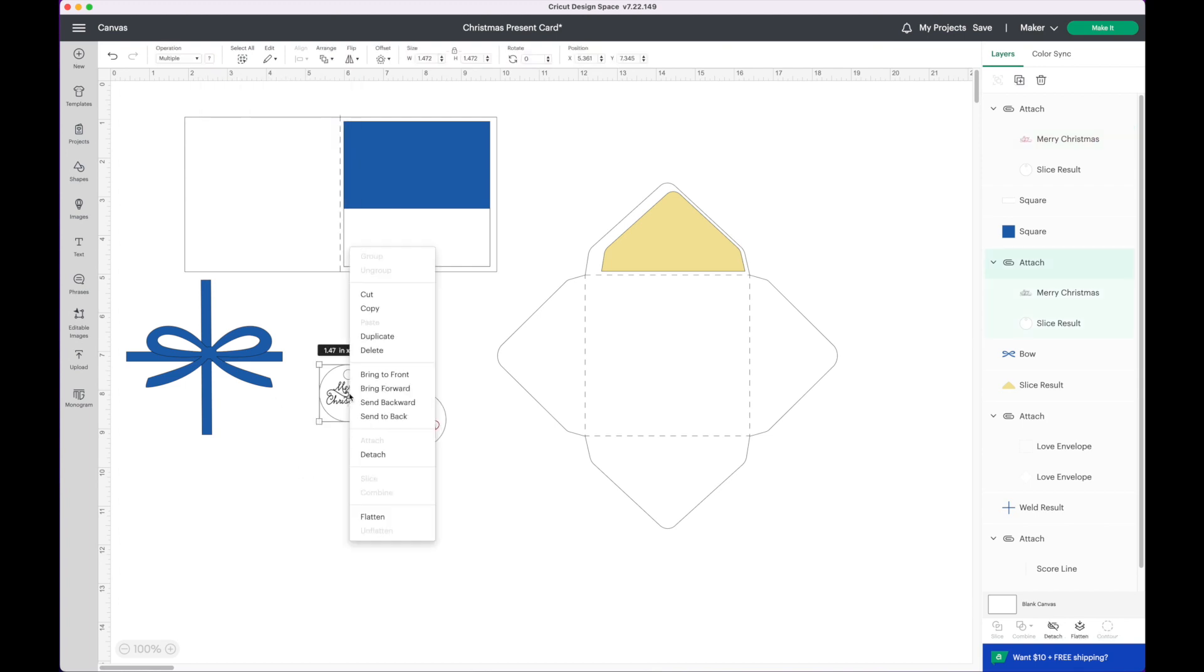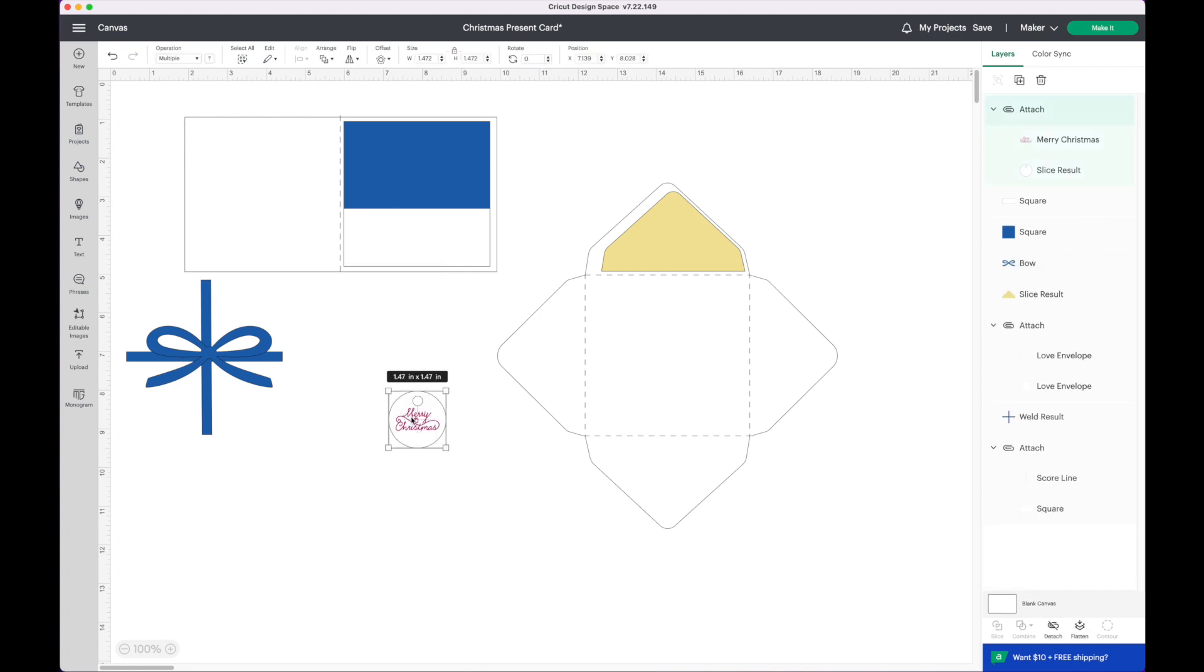I'm also going to delete this one, delete it, and then just duplicate this one. So now I have two. So I'm going to use one of them for the tag of my card and then this one I'm going to use for the envelope.